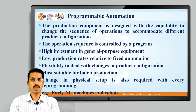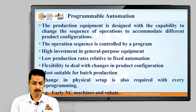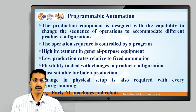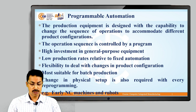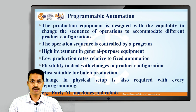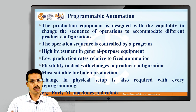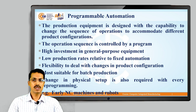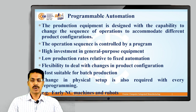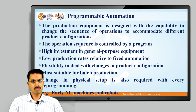The second type is programmable automation, for high variety and low volume. In programmable automation, the production equipment has the capability to change the sequence of operations to accommodate different product configurations. If there is a frequent change in design, it can be accommodated easily using programmable automation. The operation sequence is controlled by a program — a set of instructions. Depending upon the design received from the design department, we create a program, feed it into the machine, and the manufacturing process is carried out accordingly.